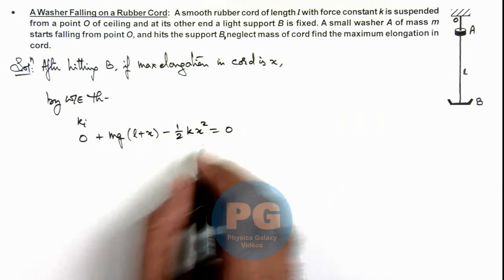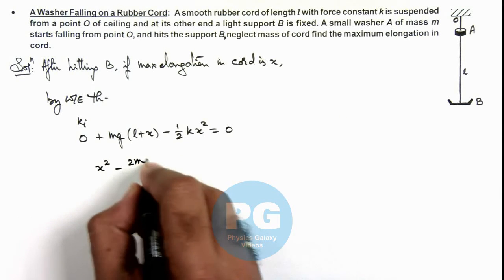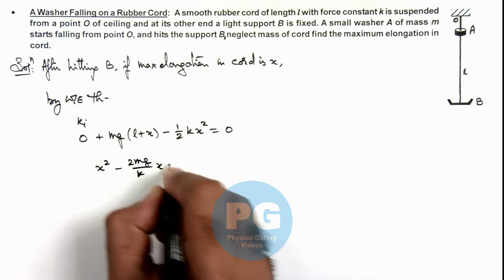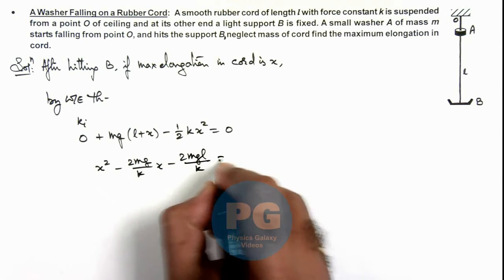So rearranging these terms we can write: x² - (2mg/k)x - (2mgl/k) = 0.